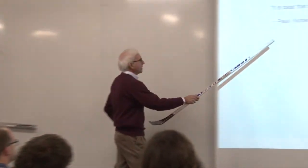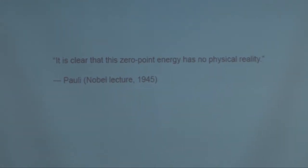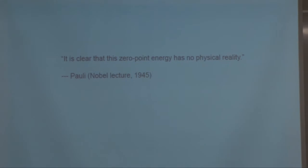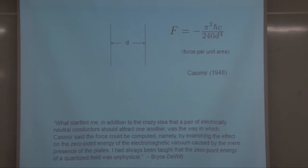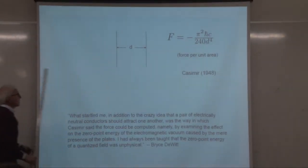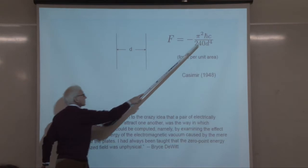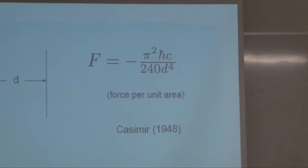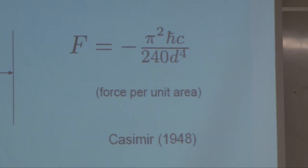Pauli, at the end of his 1945 Nobel lecture, said it was clear that zero-point energy has no physical reality — whereas Casimir predicted a physical measurable effect based on zero-point energy. Here is the formula for the Casimir force between two perfectly conducting parallel plates separated by distance d: the force per unit area contains h-bar (it's a quantum effect) and goes as one over d to the fourth.